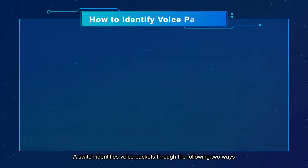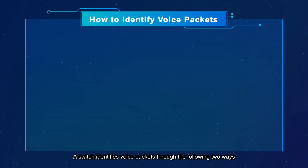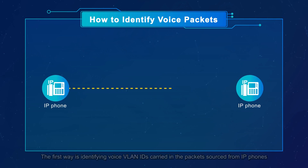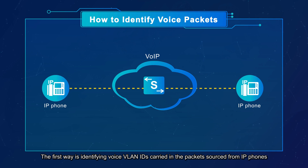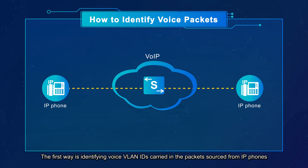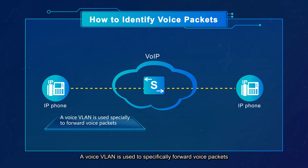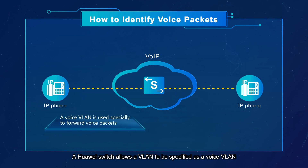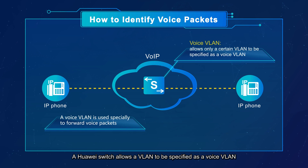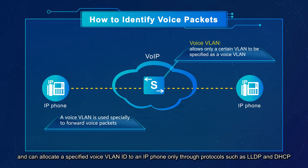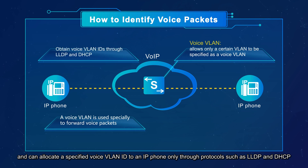A switch identifies voice packets through the following two ways. The first way is identifying voice VLAN IDs carried in the packets sourced from IP phones. A voice VLAN is used to specifically forward voice packets. A Huawei switch allows a VLAN to be specified as a voice VLAN and can allocate a specified voice VLAN ID to an IP phone only through protocols such as LLDP and DHCP.